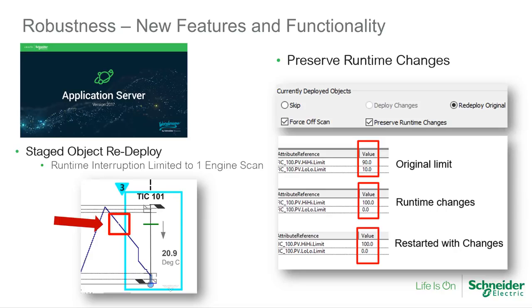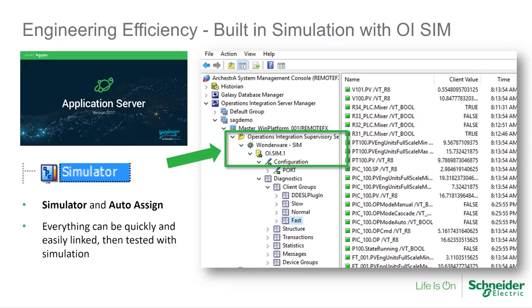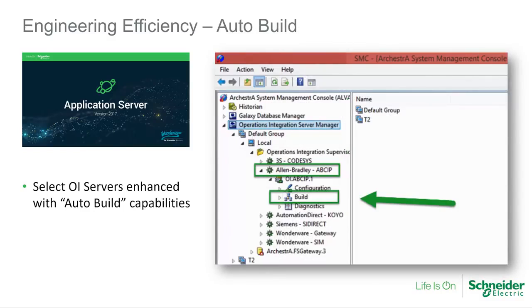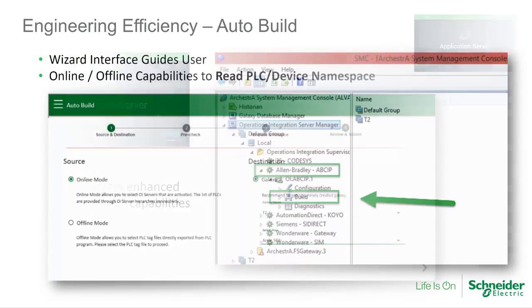Application Server has a new object redeployment mechanism, which reduces runtime interruptions to a single engine scan, providing a virtually seamless deployment of configuration changes at runtime. Complementing that is a new feature which allows users to optionally preserve changes made to important setpoints and other operator-settable values across deployment operations. The new simulation OI server provides application developers the opportunity to test their System Platform application using automatically bound simulated data. One of the exciting new engineering efficiency capabilities added to Wonderware System Platform 2017 is AutoBuild.